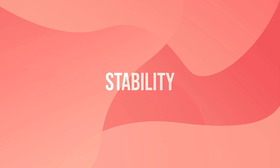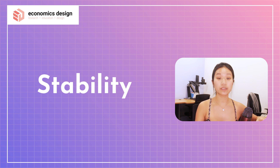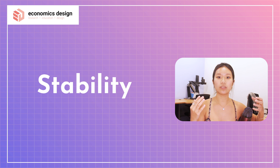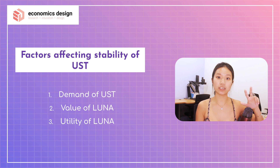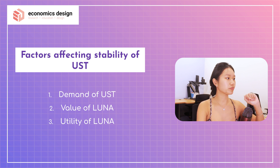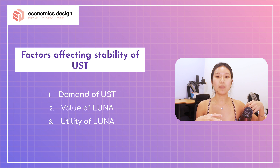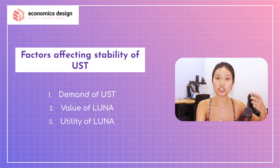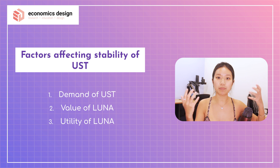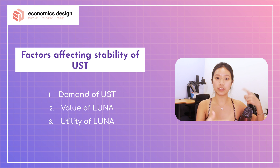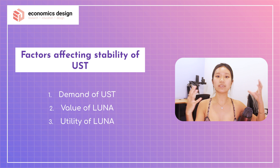How does UST maintain stability as an algorithmic stablecoin? There are three main factors: the demand of UST, the value of Luna, and the utility of Luna. When we talk about demand of UST, we're talking about how many people are using it. As more people demand UST — for transactions, staking, or other reasons — it increases the velocity of tokens exchanging hands, which increases the price stability of UST.